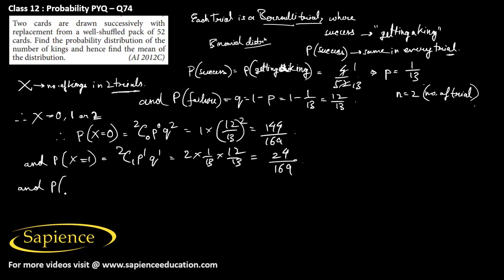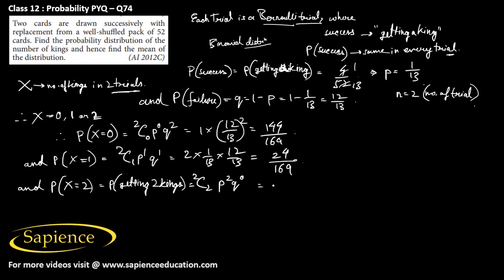The probability of X equals 2 — getting both kings — is 2C2 times p^2 times q^0, which equals 1 times (1/13)^2 = 1/169.